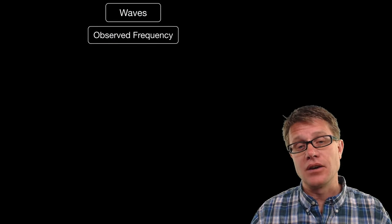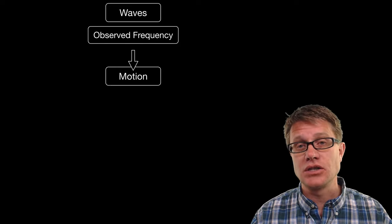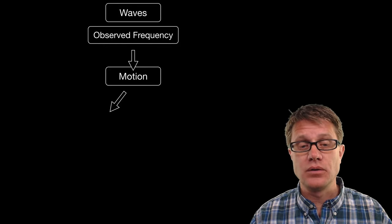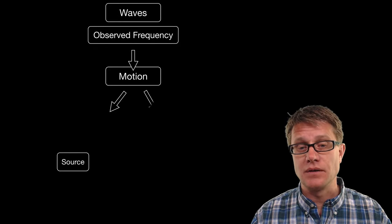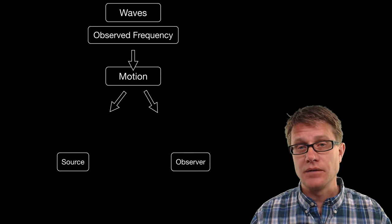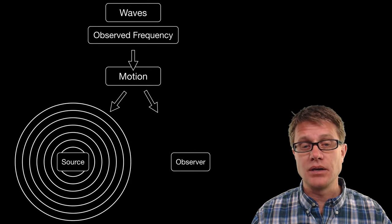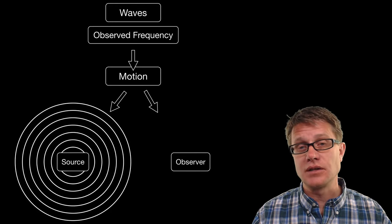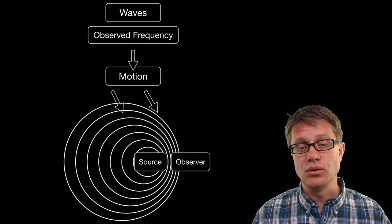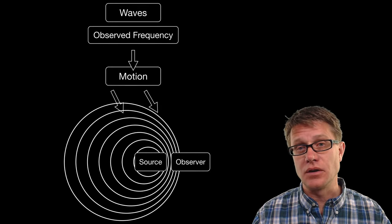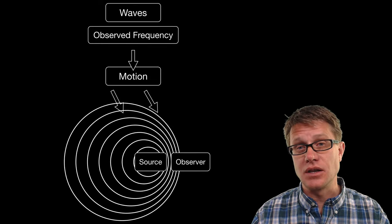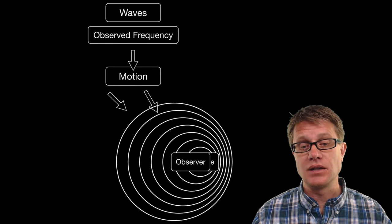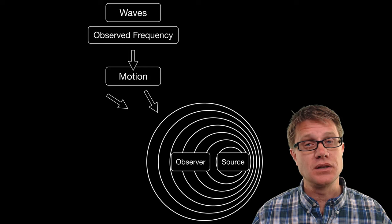And so waves and their observed frequency will change due to motion. And let us say we have got a source of those waves and then we have got an observer. If the source of the waves is generating waves that move out, they will be of uniform distribution unless it is moving. So as that source moves, as it approaches the observer we are going to see an increase in the frequency of those waves. And then as it passes the observer we will see a decrease.